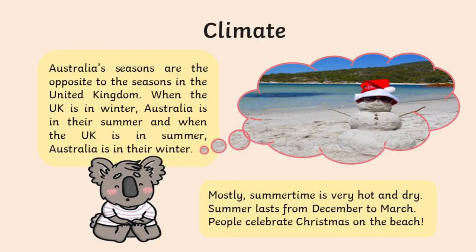Let's have a think about the climate in Australia. They are pretty much the opposite of us — they have opposite seasons. So when we have winter, they are in summer, and when they are in summer, we are in winter. For example, they could have their Christmas dinner on the beach as a barbecue, because it's their summer. Whereas for us on Christmas Day, it's a bit cold, wet, and damp. We are almost complete opposites when it comes to seasons.